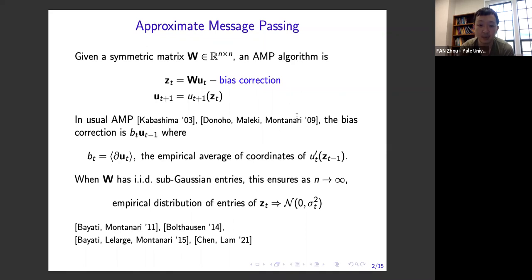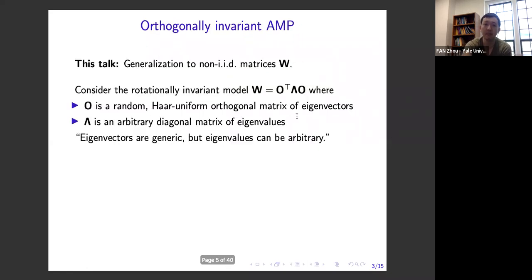This kind of statement was first proven for Gaussian W by Bolthausen and Beati-Montanari, and then universality arguments have extended this to sub-Gaussian W, including notably a recent paper by Chen and Lam last year. What I want to do in this talk today is to discuss versions of AMP for non-iid matrices W, which is related to the topic that Cedric talked about at the start of the session.